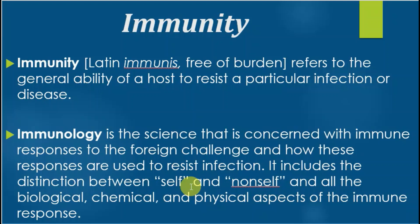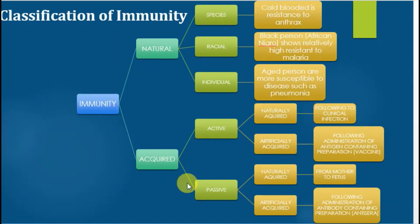So immunity means the capacity of the body to resist the entry of microorganisms and infectious agents, and the study of this resistance is called immunology. Now, different types of immunity exist. Immunity is classified into two categories: one is natural immunity and the second is acquired immunity.